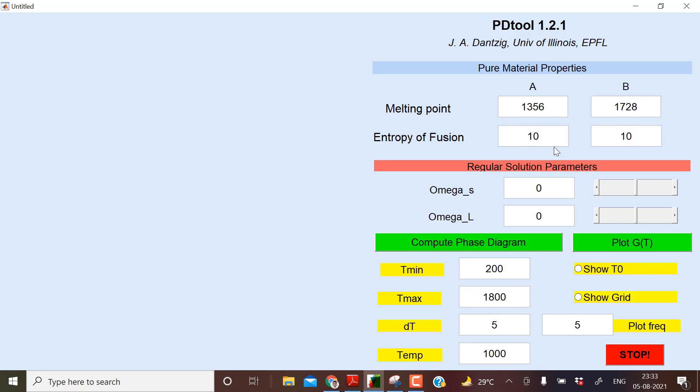1455 plus 273 is 1728. Entropy of fusion, let this value be as it is. So omega_s and omega_l - since this forms isomorphous, we know, so omega_s and omega_l let it be 0. T minimum 2000, then 1800. So here the temperature has gone up to 1728, so let me type it as 2000.